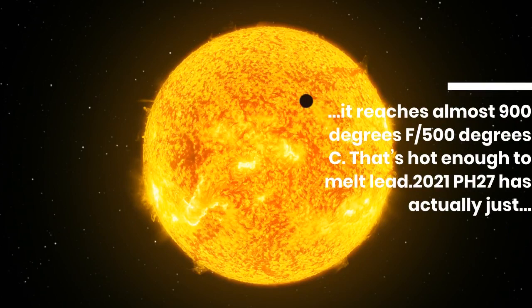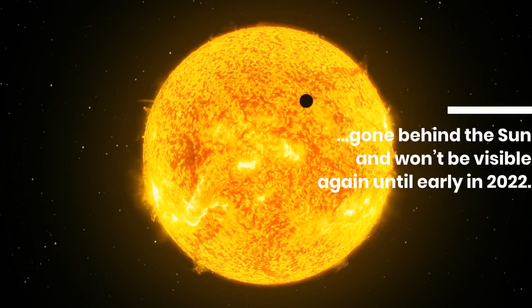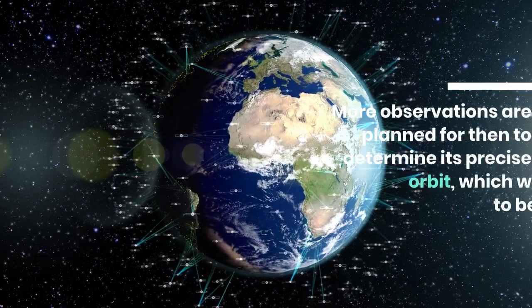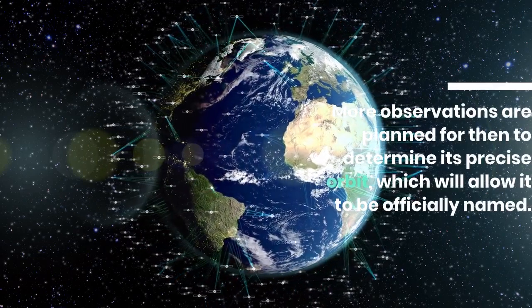2021 PH27 has actually just gone behind the Sun and won't be visible again until early in 2022. More observations are planned for then to determine its precise orbit, which will allow it to be officially named.